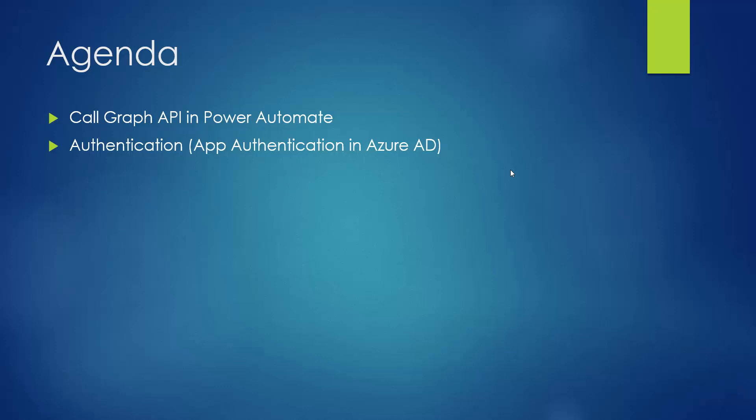To call the Graph API in Power Automate, we will be using the HTTP action. Inside the HTTP action we have to do authentication for this Graph API. For the authentication, we will be using App Authentication — we will be registering an app inside Azure AD.